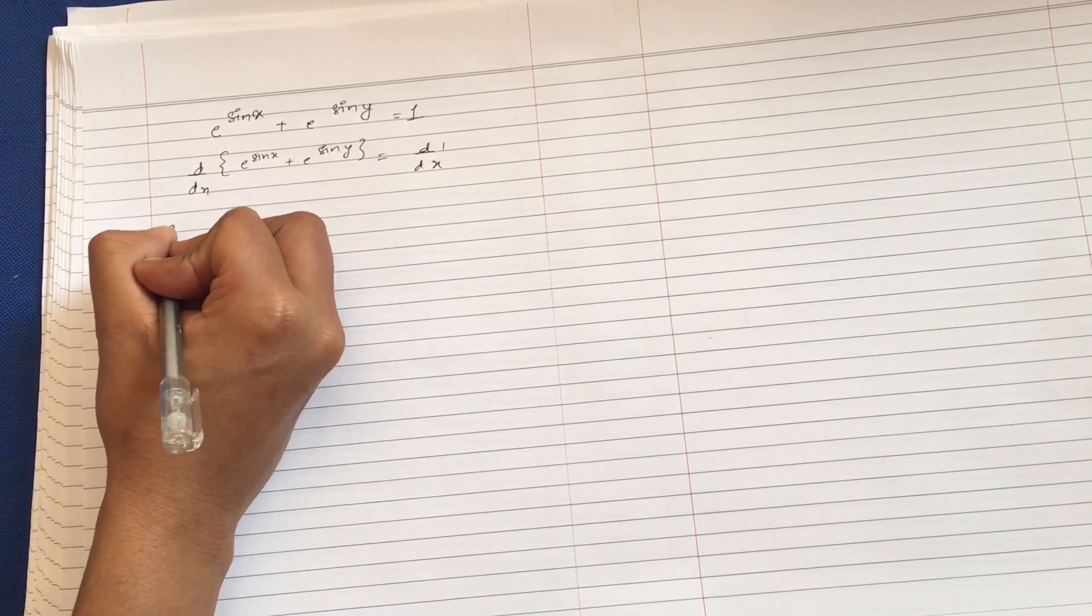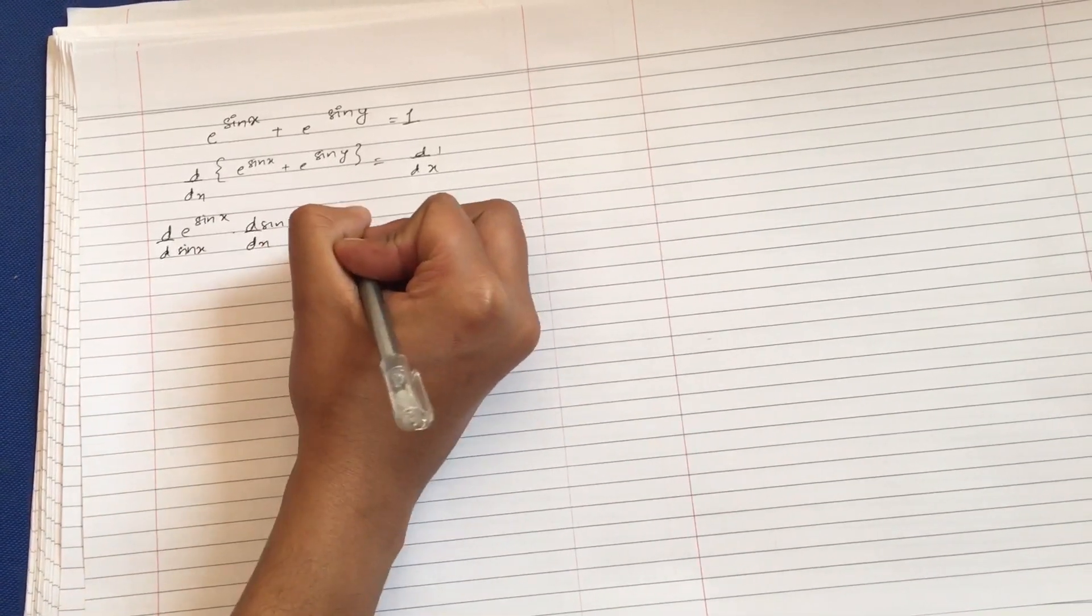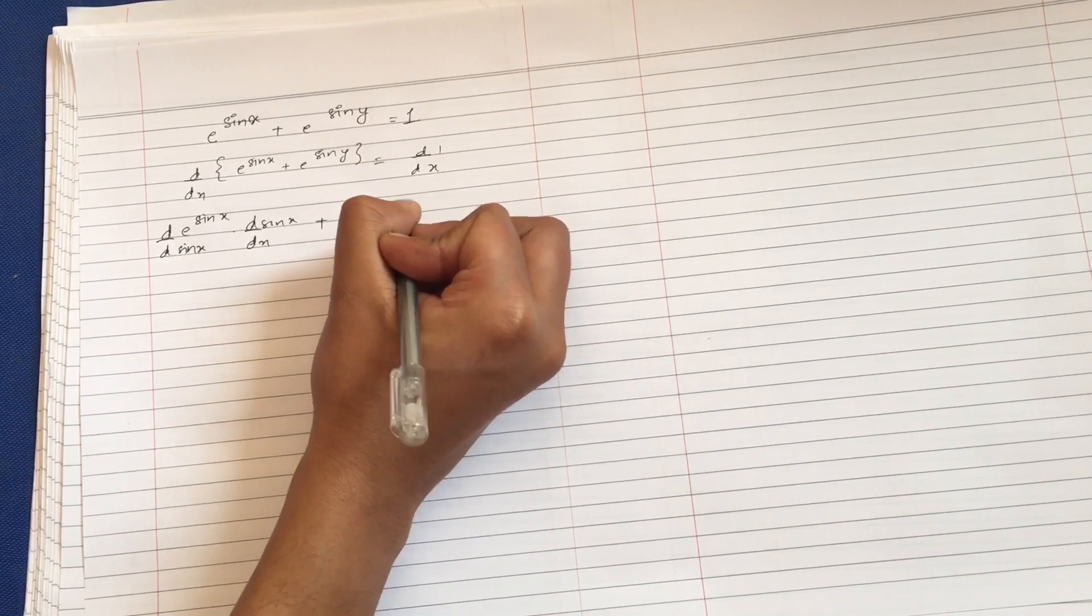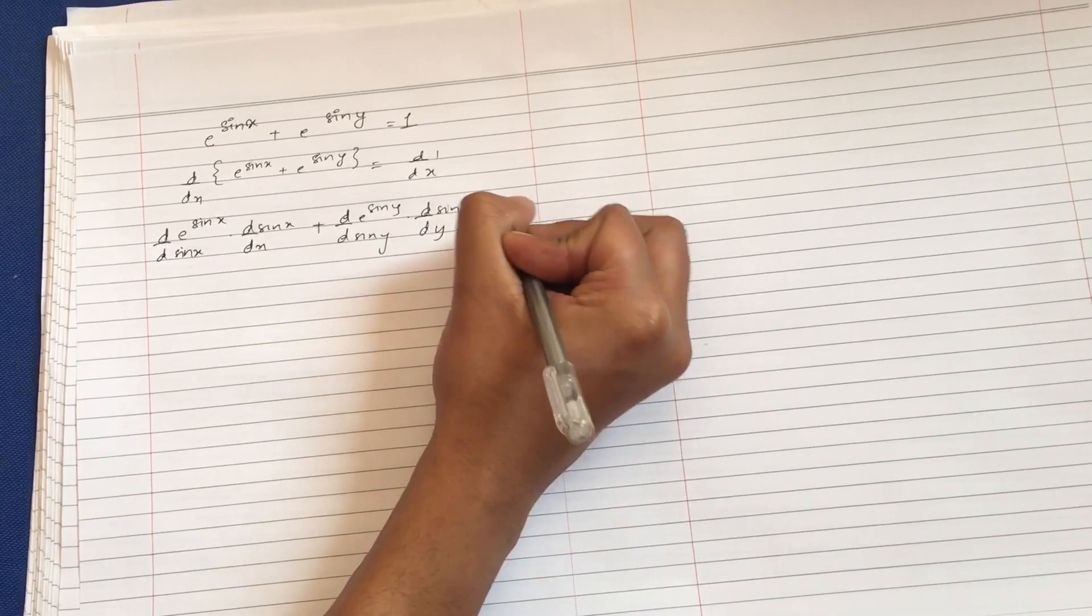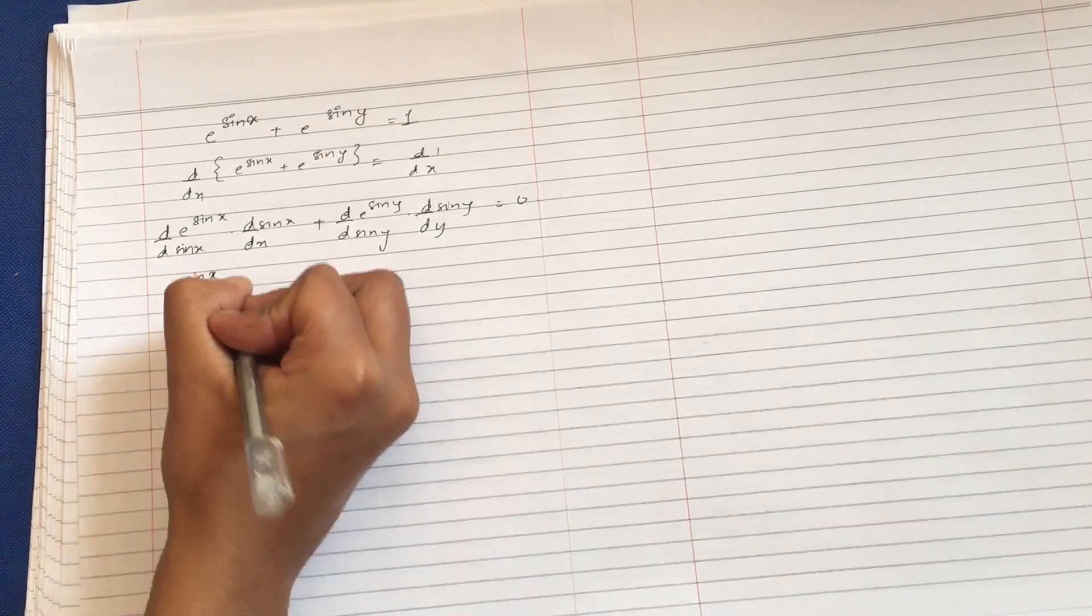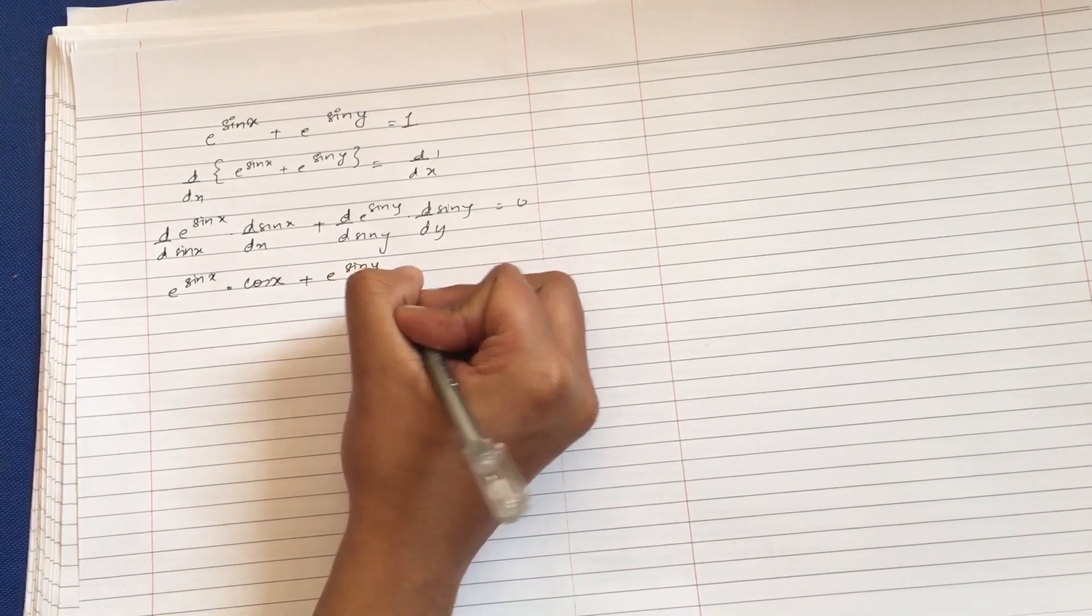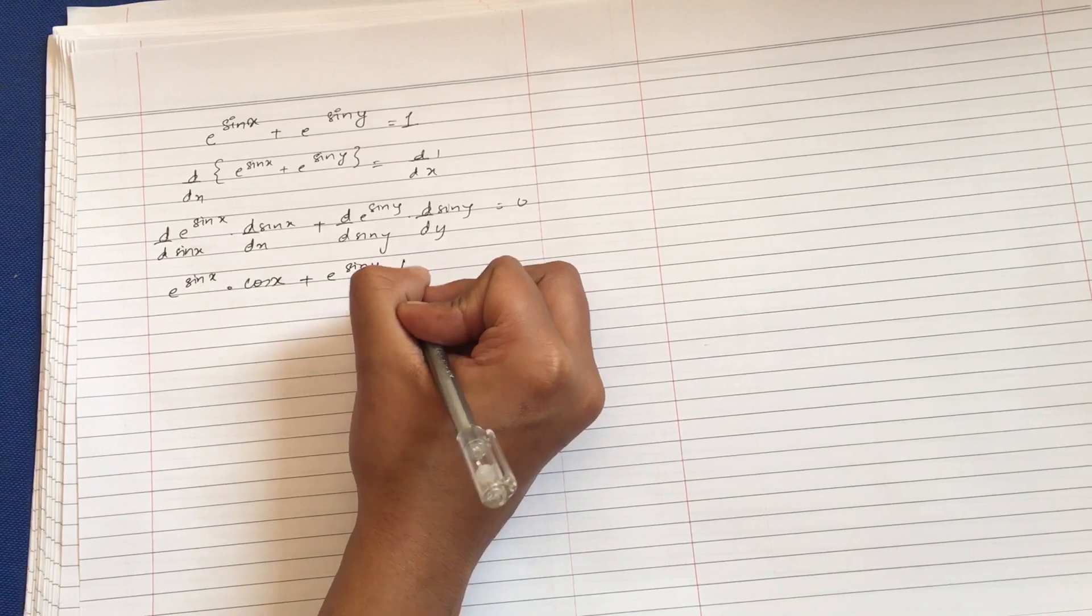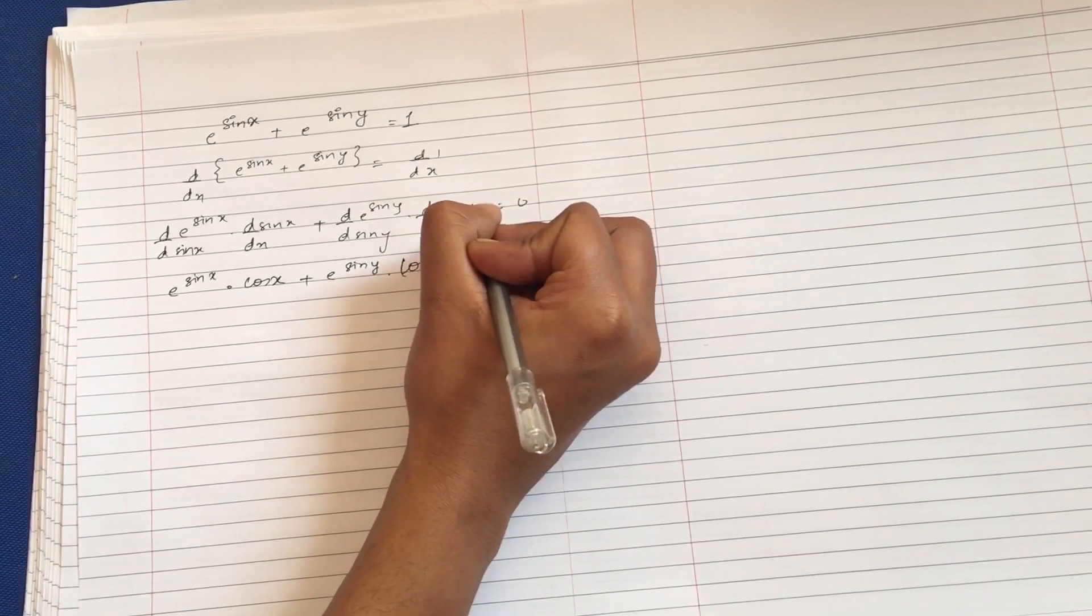First, we differentiate e to the power sin x, so we take the base and then times derivative of sin x. Same thing for e to the power sin y: base times derivative of sin y times dy by dy, equals 0.